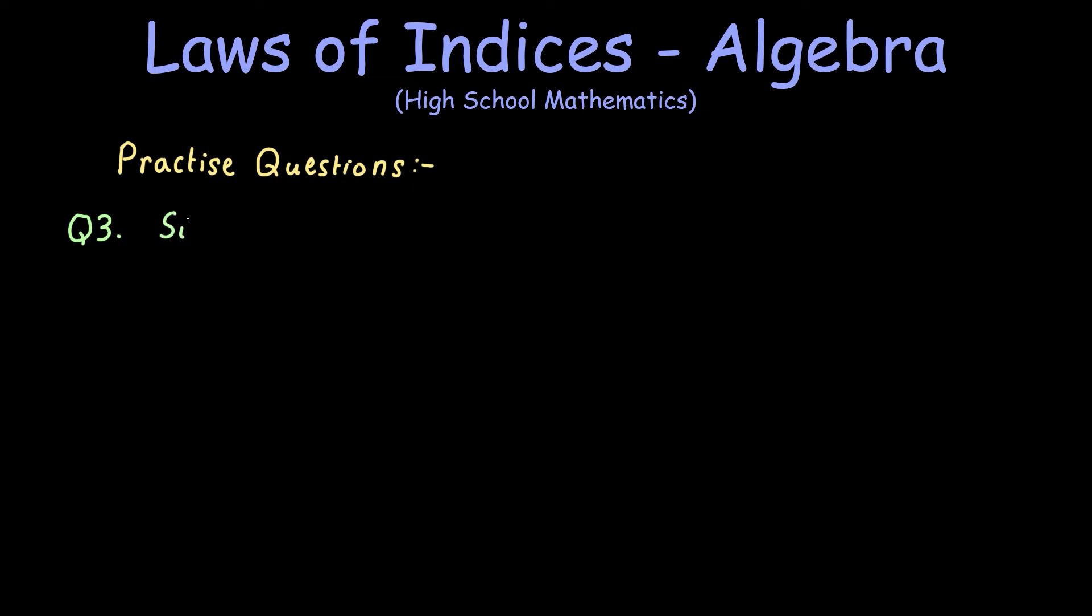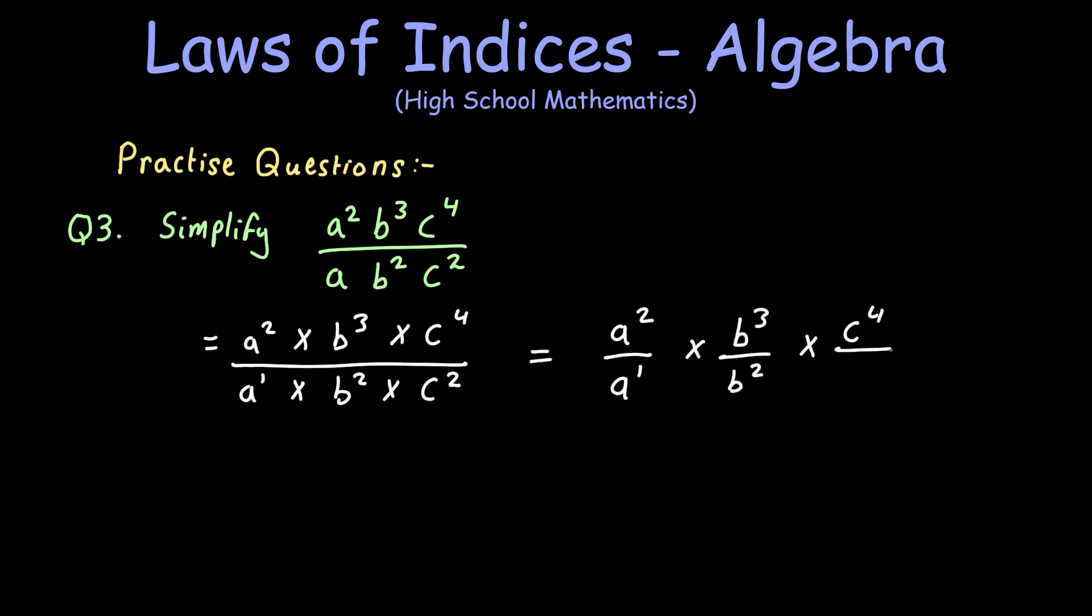With question three, we've got two expressions divided by one another. These two expressions have the same bases, and that's important. So here I've split out the bases a, b, and c, making them their own fraction. And this simply makes it easier to see what law of indices to use for this example.